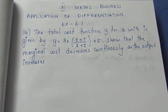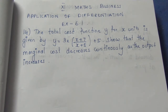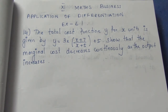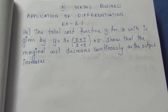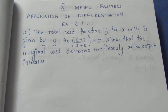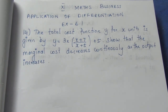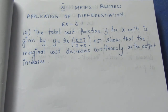The cost function y for x units is given by y is equal to 3x into (x plus 7) by (x plus 5) plus 5. Show that the marginal cost decreases continuously as the output increases.